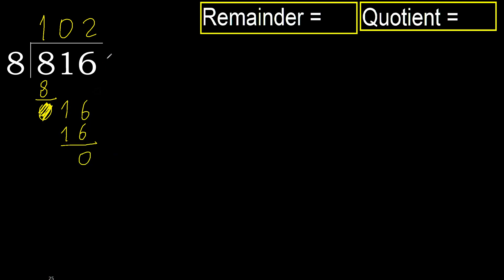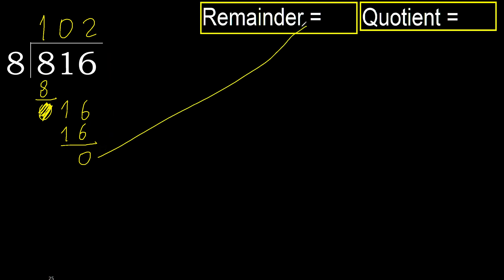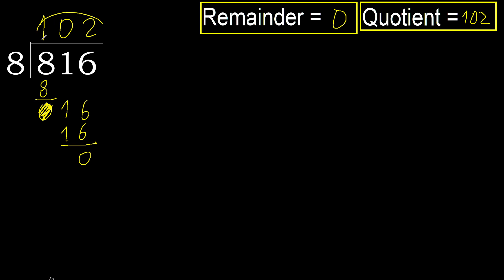Next. There is no number, therefore finish. 0. Therefore, 816 divided by 8 is here.